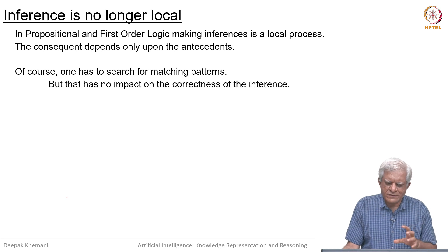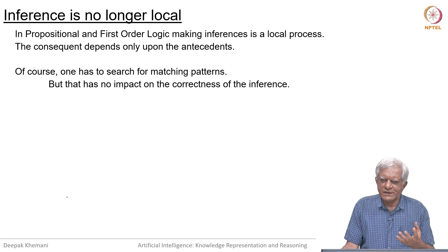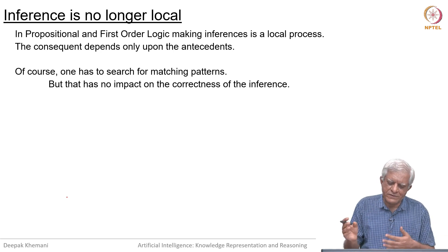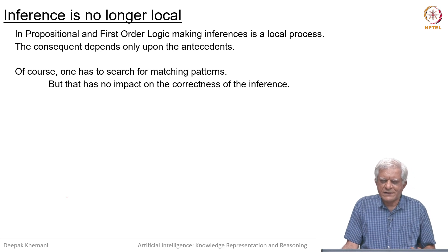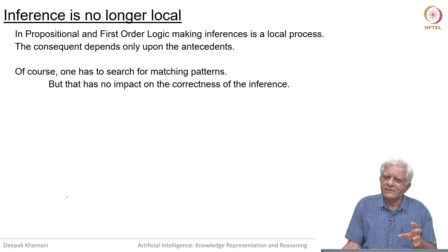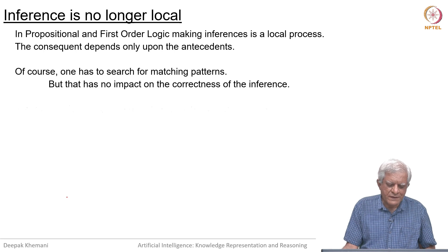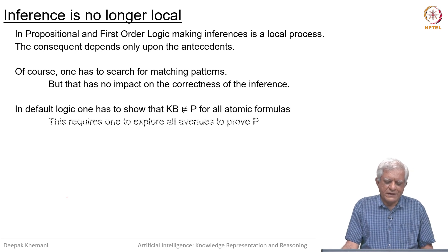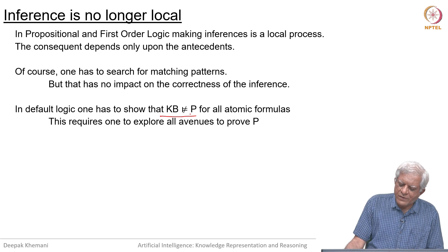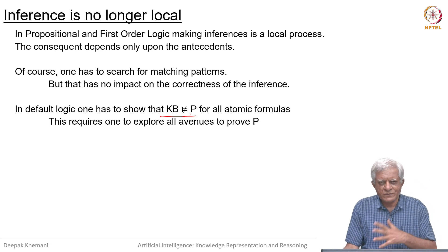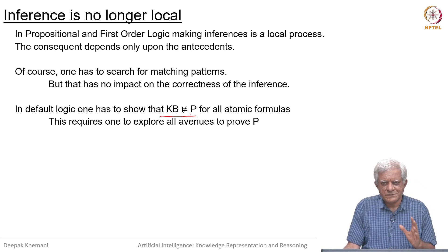One has to search for those antecedents — for example, in forward chaining you would try all possible antecedents to see whether you are moving towards the consequent, and in backward chaining you move backward from the goal searching for its antecedents — but that does not affect the correctness of the inference. Logically speaking, once the antecedents are there the conclusion follows only from them. In default logic, because we have to show that the knowledge base does not entail a proposition p for all atomic sentences, this requires exploring all avenues to prove p, which means you have to look at the entire knowledge base — so it is no longer a local process.